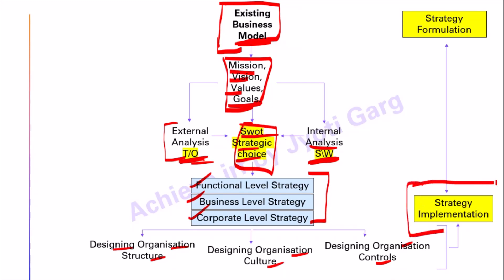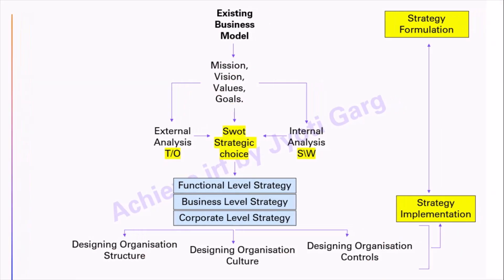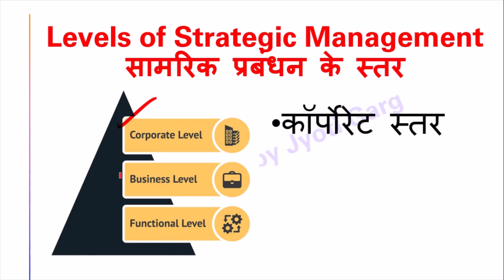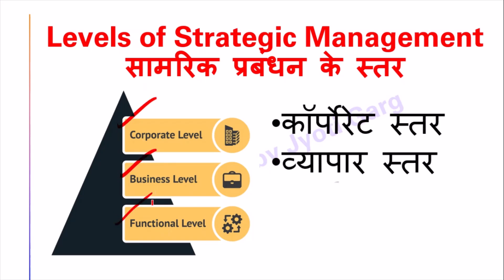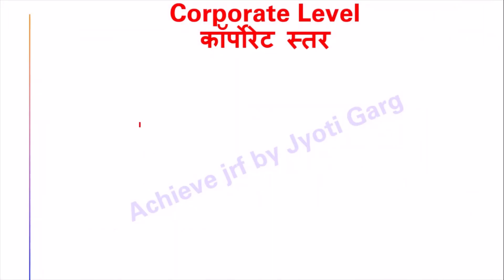We implement our strategy by designing our existing business tied to corporate level strategy. This is all part of strategy formulation. Our three levels are: corporate level strategy, business level strategy, and functional level strategy.